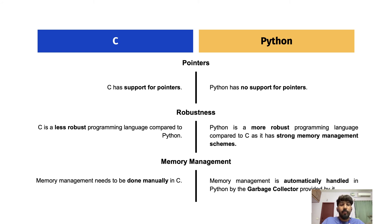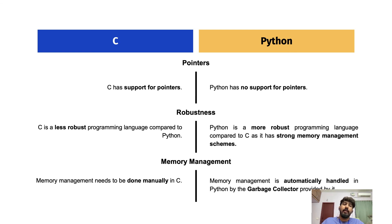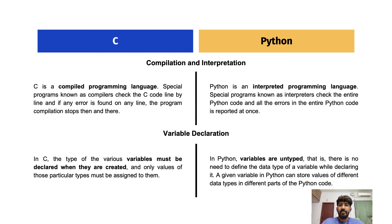Regarding robustness: C is less robust but Python is more robust because of its strong memory management schemes. In C, memory management has to be done manually, but in Python everything is automatically handled because a garbage collector is already provided. If you need to tweak the garbage collector you can do it manually, but that requires significant effort as it operates at the operating system level.